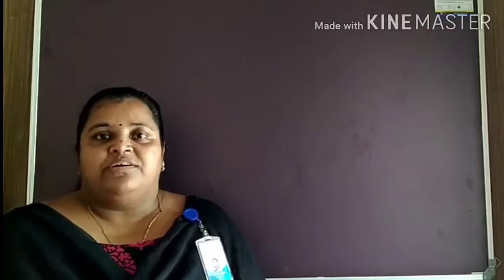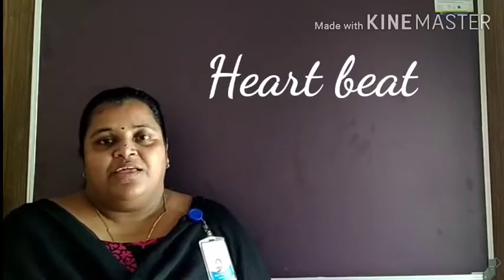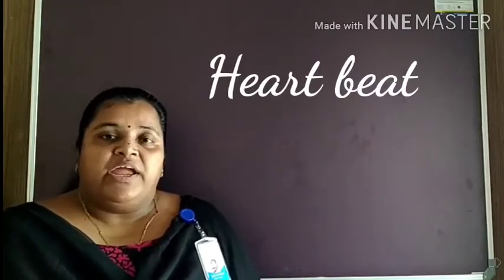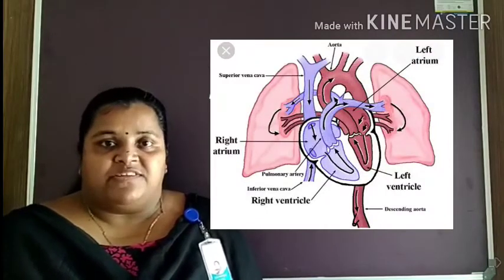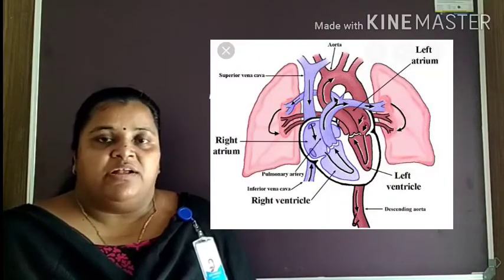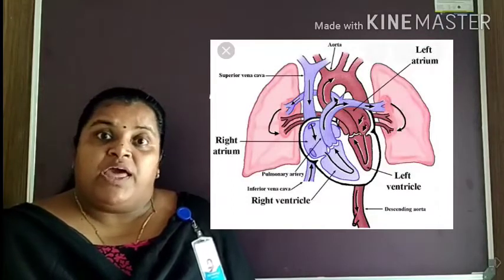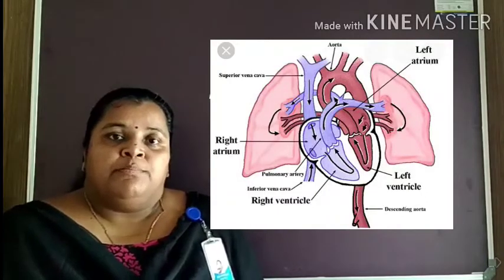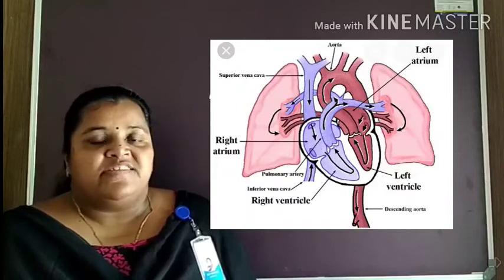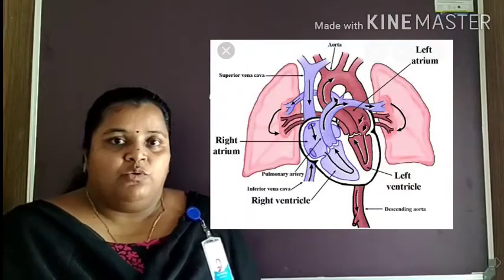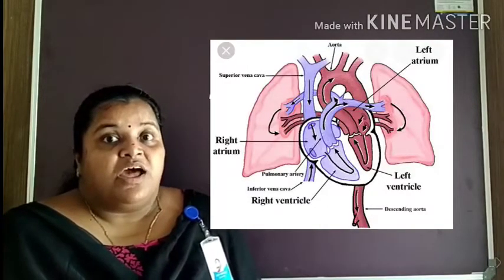The first fact is about heartbeat. One contraction and one relaxation together constitute a heartbeat. When the atria contracts, the ventricle relaxes and blood from the atria enters into the ventricle through the tricuspid valve and bicuspid valve. When the ventricles contract, the blood from the ventricles enters into the pulmonary artery and aorta through the pulmonary valve and aortic valve.